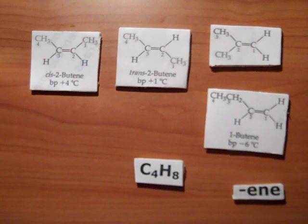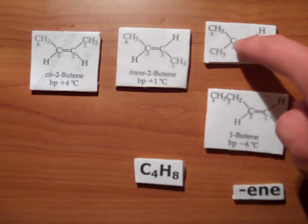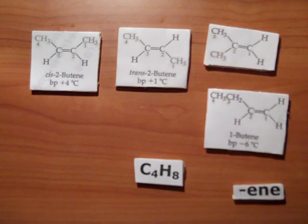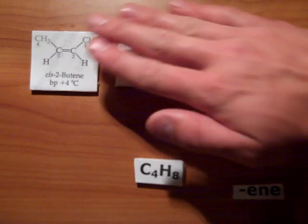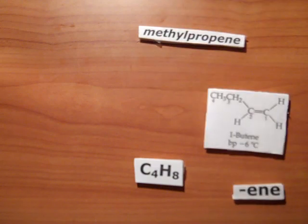The names of alkenes are based on the longest carbon chains, as with alkanes. This alkene is part of a three-carbon chain. One, two, three. Thus, we use propene as the base of the name. The substituent group methyl can only attach to the second carbon, and therefore no prefix number is needed. Methylpropene is the resulting name.